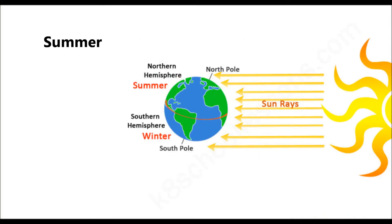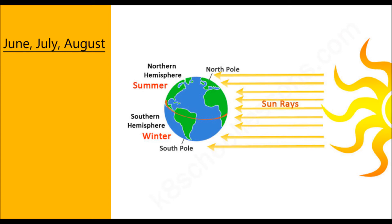Summer is the second of the four seasons. In June, July, and August, the North Pole is tilted towards the Sun. The Northern Hemisphere, including North America, receives the most sunlight, producing warmer weather and longer days. The Southern Hemisphere goes through winter during this time.